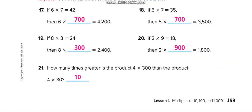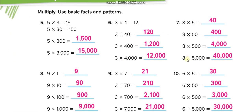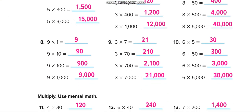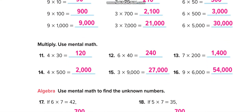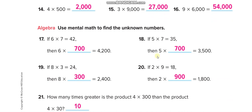Next page — independent practice. Solve it all and then match your answers from this video. It's a very simple lesson: just remove the zeros, multiply, and put the zeros back. Like 3 times 4 is 12, and with one zero the answer is 120. Similarly, just remove the zeros, multiply, and put the zeros back, then match your answers from this video.